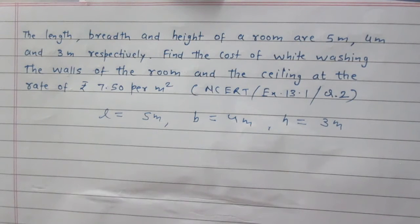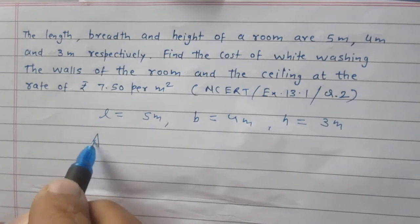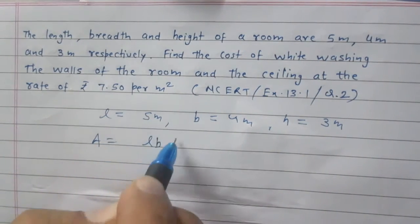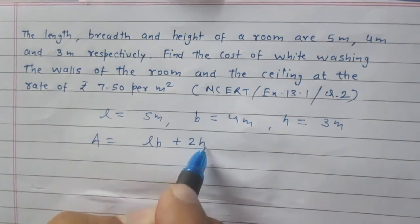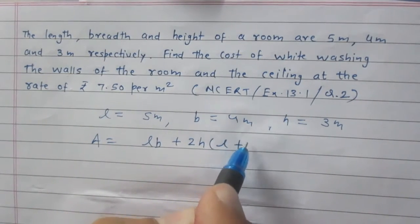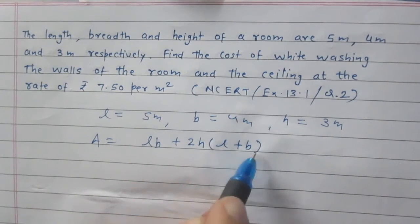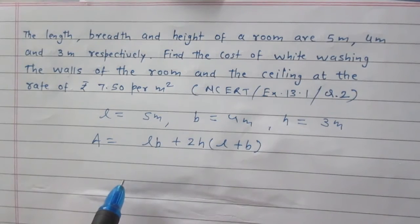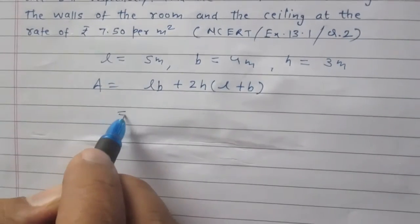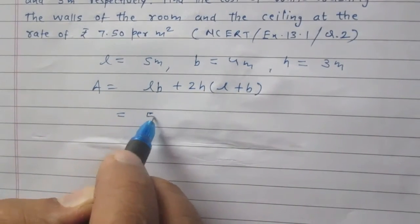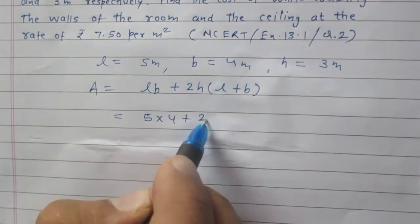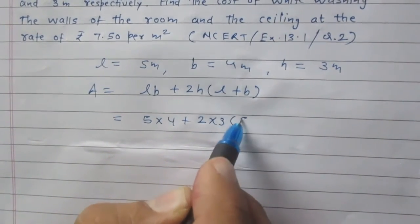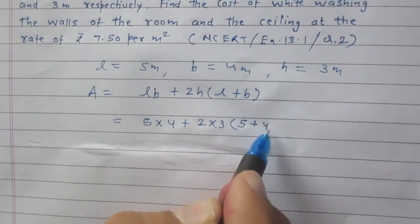Area of the cuboid without its top or without its bottom is length into breadth plus twice of height multiplied with whole sum of length and breadth. On substituting values here, so for L 5, breadth is 4 plus twice of 3 then 5 plus 4.